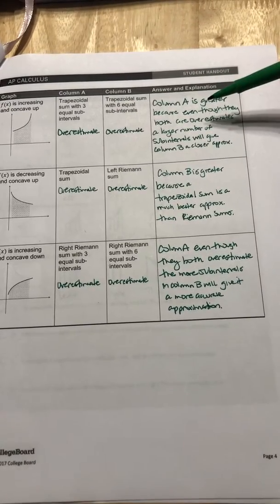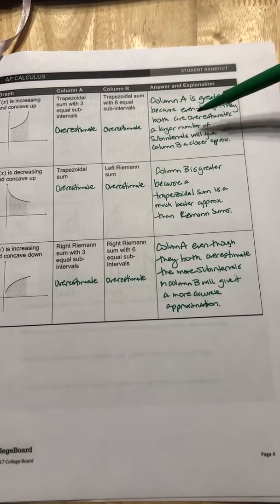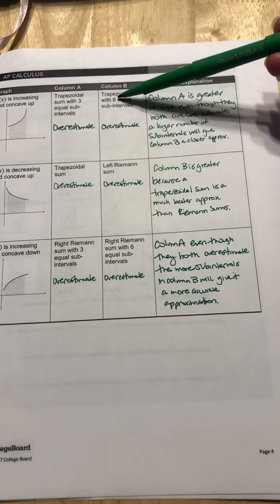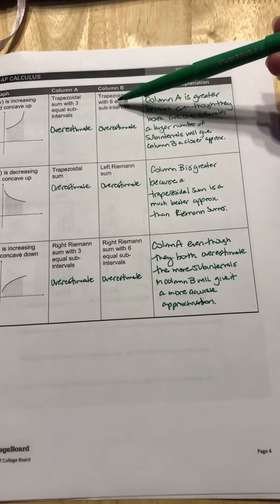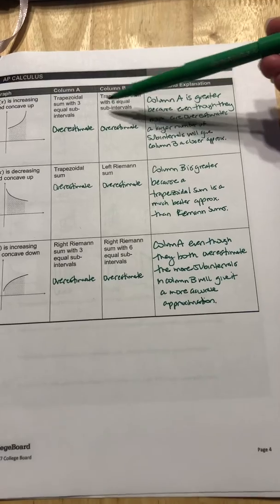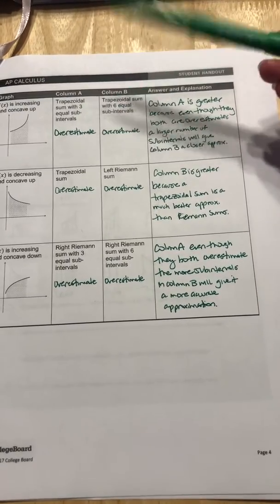But column A is going to be greater because even though they're both overestimating, the larger number of sub intervals for column B makes it have a closer approximation and column A is going to be overestimating it.